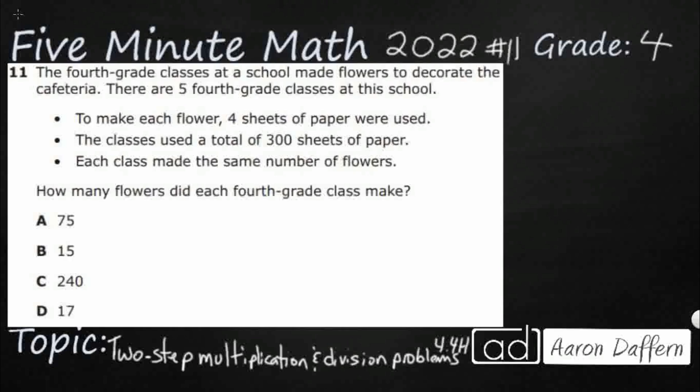So we've got fourth grade classes at a school. They're making flowers. There are five classes. To make each flower, four sheets of paper were used and the classes used a total of 300 sheets. So let's start with that.